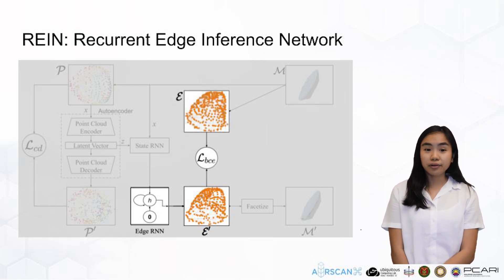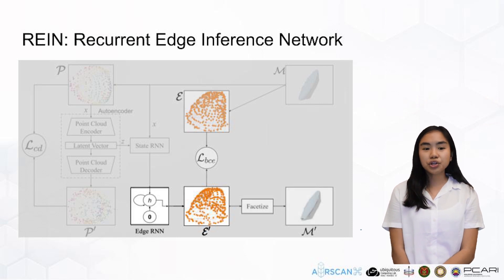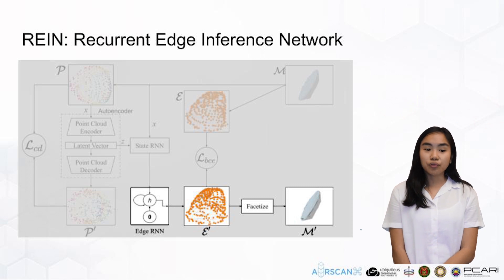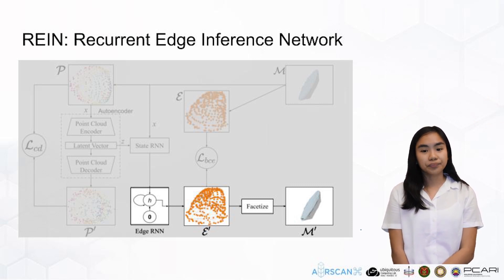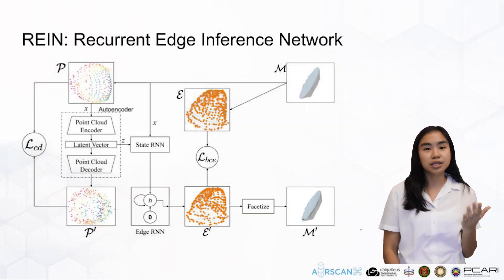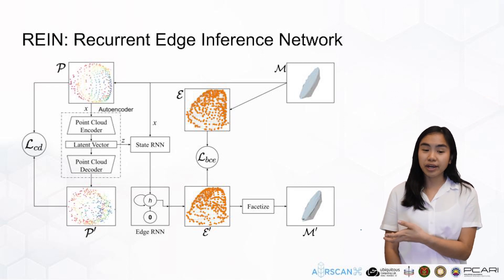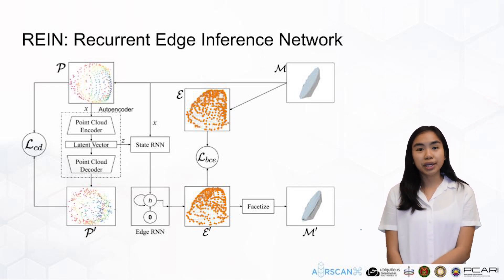Supervised training was done for edge prediction with binary cross entropy as the loss function. After edges, faces are produced next using the facetized block. Facetized iterates over all the vertices and the predicted edges to form faces. As long as three points are connected by edges, a face is formed. After all those steps — generating vertices, their latent vector representations, their edges, and finally the faces — RAIN will have generated a mesh.